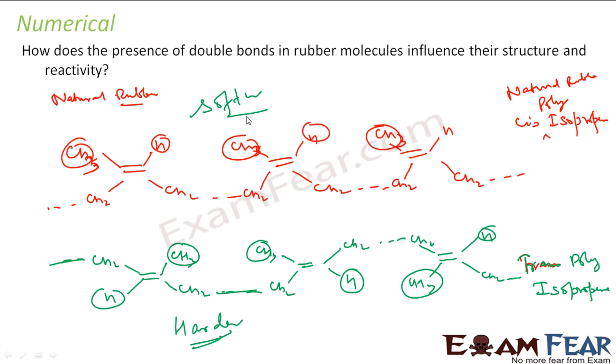In fact both are natural rubber, both are different natural rubbers, but this is harder and this is softer. If you see the chemical composition is all same, but again depending on the presence of bond, the way it is bonded is cis or trans, the presence of double bond in the rubber influences their structure and reactivity.